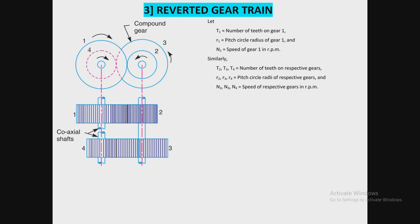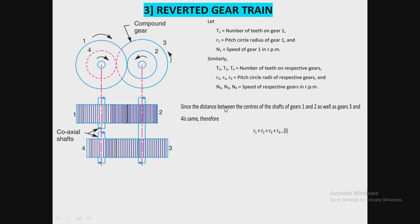For the velocity ratio of the reverted gear train, we require some terms: T1 is the number of teeth on gear 1, R1 is the pitch circle radius of gear 1, and N1 is the speed of gear 1 in RPM. Similarly, T2, T3, T4 are the number of teeth on respective gears; R2, R3, R4 are the pitch circle radii of respective gears; and N2, N3, N4 are the speeds of respective gears.